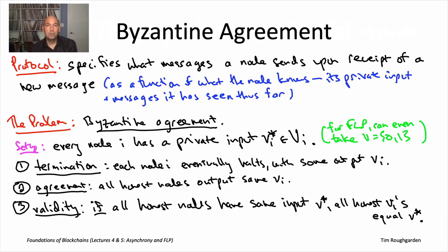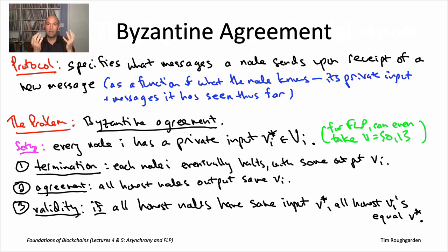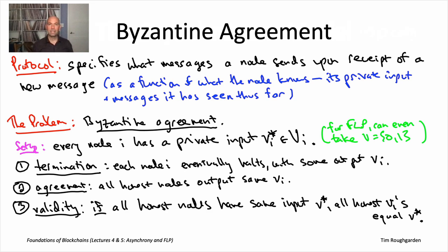The FLP impossibility result concerns a consensus problem known as Byzantine agreement. This adds to our list: we have state machine replication (SMR), which is multi-shot consensus; Byzantine broadcast, which is single-shot consensus with a distinguished sender; and now Byzantine agreement — single-shot consensus with no distinguished sender. All nodes have a private input, and you always want to terminate and agree. Validity requires that if all honest nodes share the same input, that must also be the output.